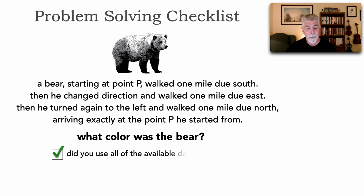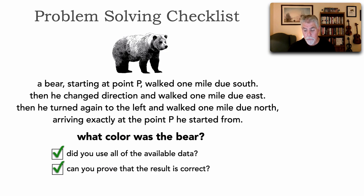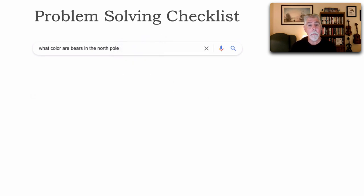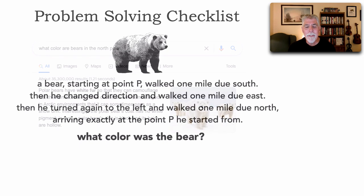So what color is the bear? Clearly white. But let's use the checklist — did you use all of the available data? Let's verify the directions: one mile due south, one mile due east, one mile due north, arriving exactly at the same point. Yes, we did. Can you prove the result is correct? Yes — a simple Google search for 'what color are bears in the north pole' shows polar bears, which have white fur. Can you check the result? Does it make sense? Yes, this points to the north pole.